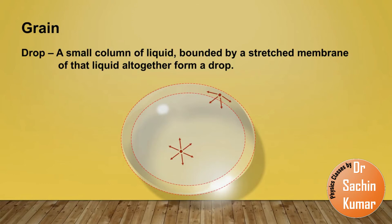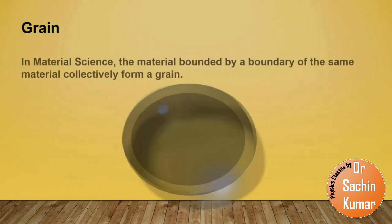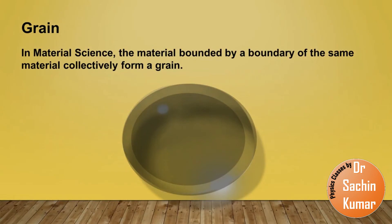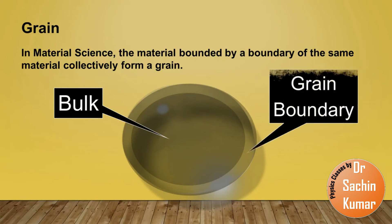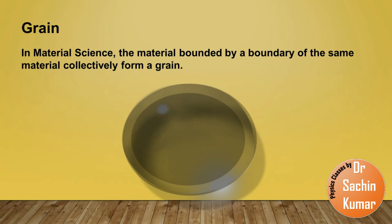On a similar basis, let us discuss the definition of a grain in material science. The material bounded by a boundary of the same material, collectively they form a grain. In this, the inner part is called as the bulk of the grain and the outer boundary is called as the grain boundary. But how could we match this definition with the definition of a drop? Does the property of grain boundary differ from the property of the bulk? And the answer is yes.